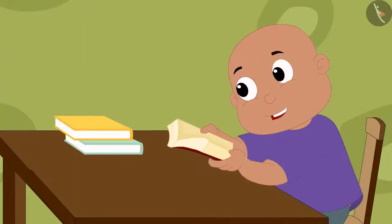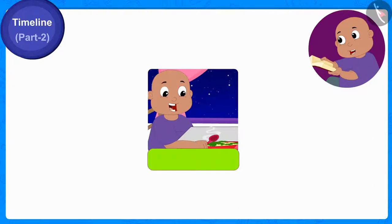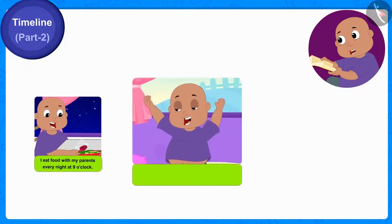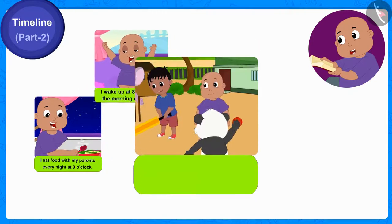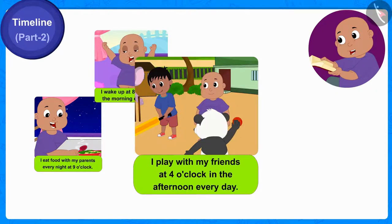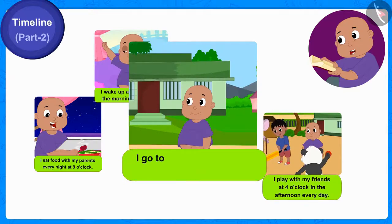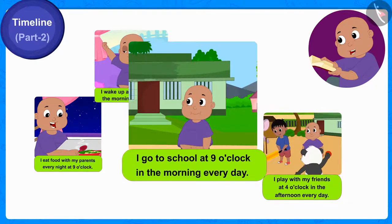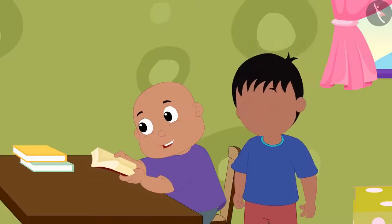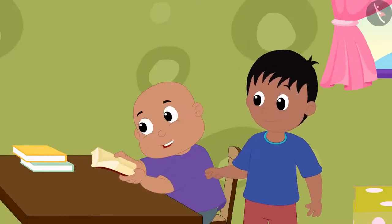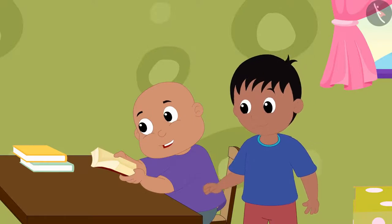Bablu started reading: I eat food with my parents every night at 9 o'clock. I wake up at 8 o'clock in the morning every day. I play with my friends at 4 o'clock in the afternoon every day. I go to school at 9 o'clock in the morning every day. Bablu was going to read further, but Raju stopped him.